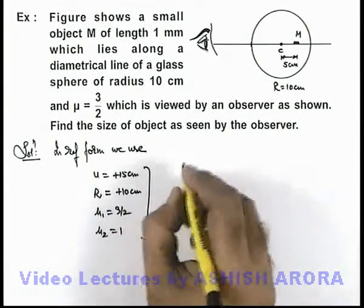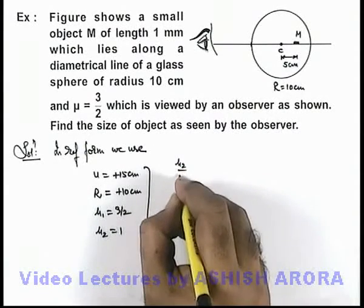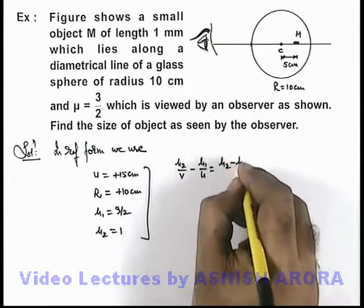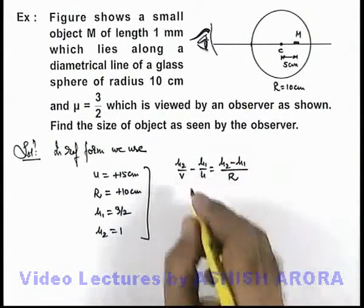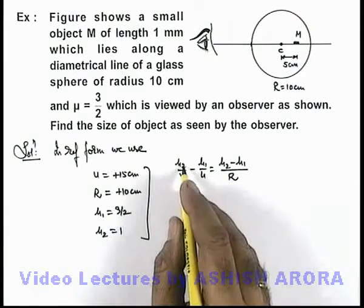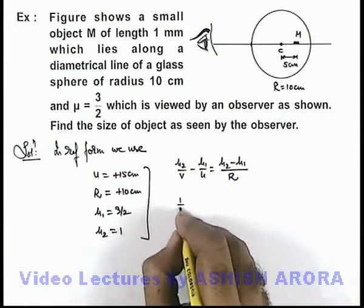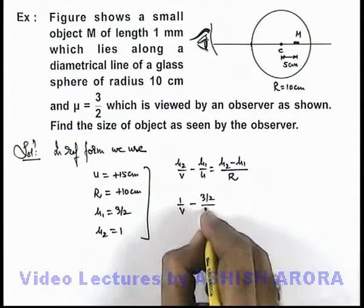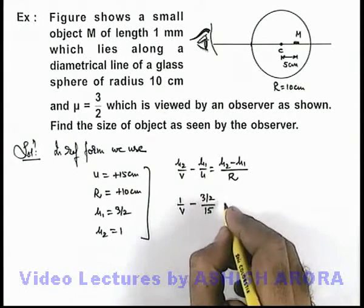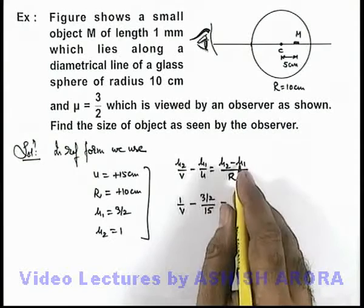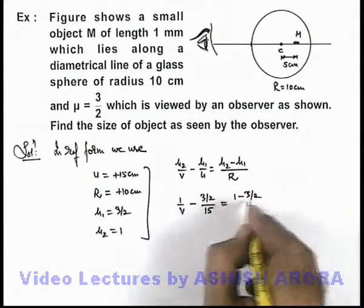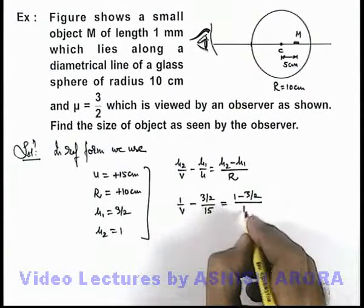And from this relation, if we use the refraction formula μ₂/v - μ₁/u = (μ₂ - μ₁)/R, then on substituting the values we will be getting 1/v minus 3/2 upon 15 is equal to 1 minus 3/2 upon the radius 10 centimeter.